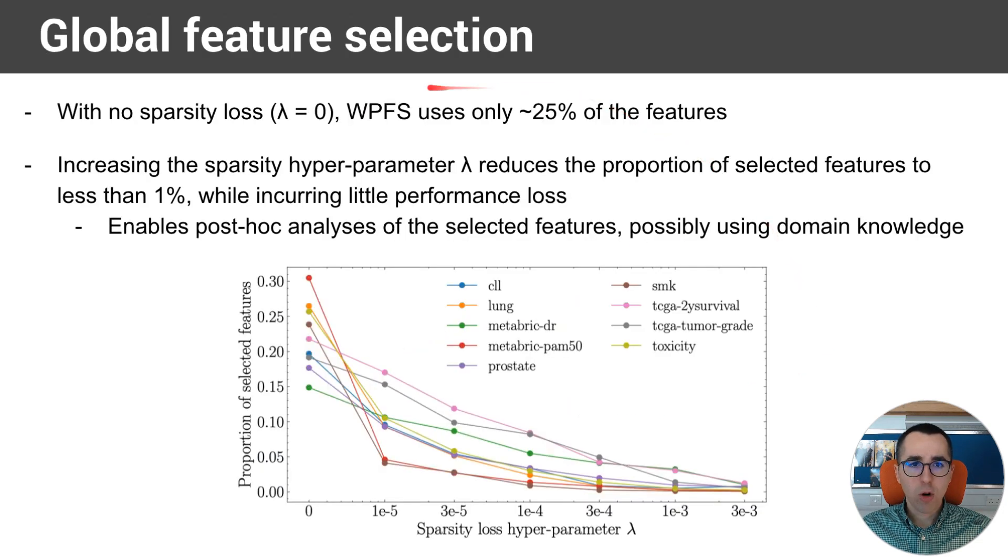Our method performs global feature selection, and the sparsity loss is a mechanism which incentivizes that. Without the sparsity loss, we notice that already our method uses only 25% of the features. And by increasing the sparsity hyperparameter, we notice that across datasets, the number of selected features drops from 25% to about 1%, while incurring insignificant performance loss. In practice, it means that one can understand which features are important for the tasks by using a higher sparsity loss and analyzing the features post-hoc.